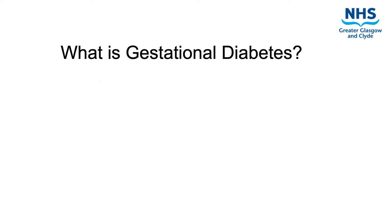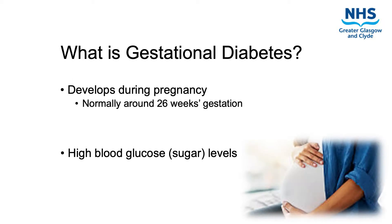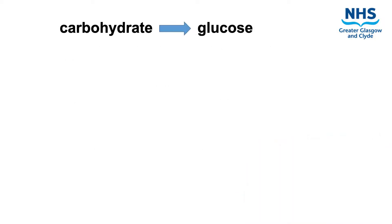So what is gestational diabetes? Gestational diabetes, or GDM, is the name given to a type of diabetes which has developed during pregnancy. It most commonly develops around 26 weeks gestation and is characterised by an increase in the amount of glucose or sugar in the bloodstream. When the body digests foods or drinks that contain carbohydrates, one of the body's main nutrients, it turns them into a type of sugar called glucose.